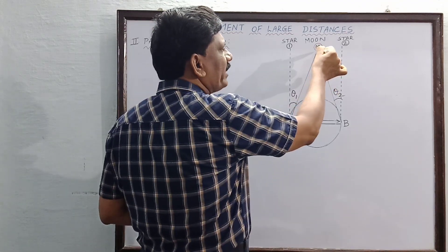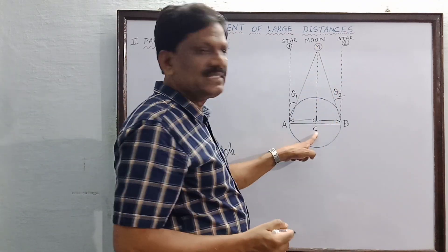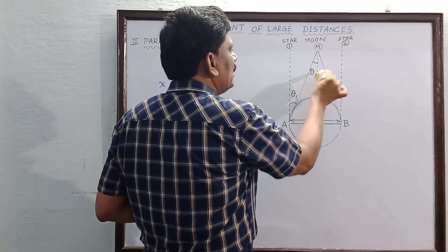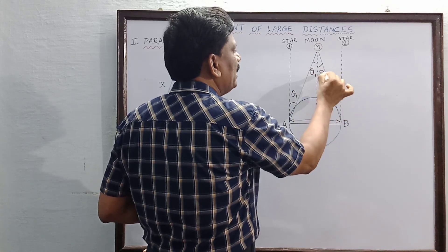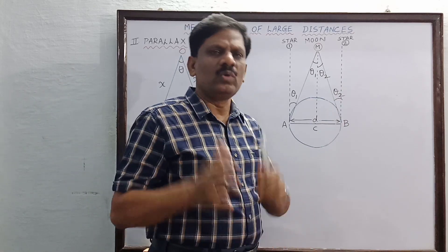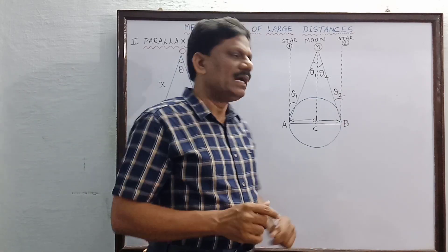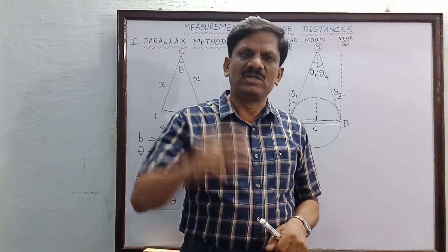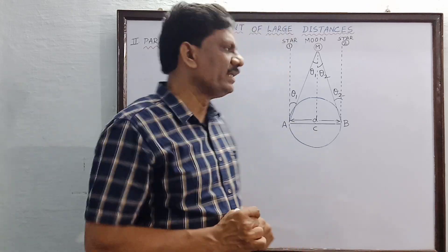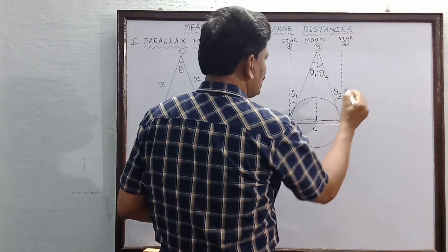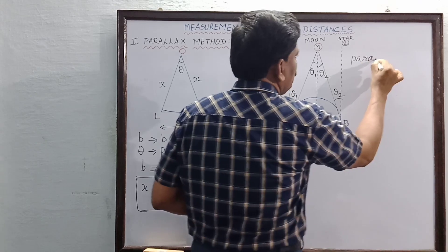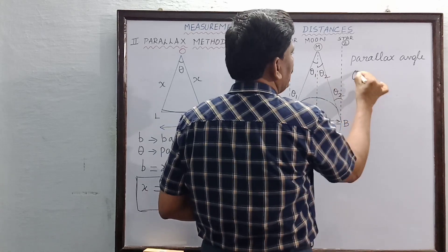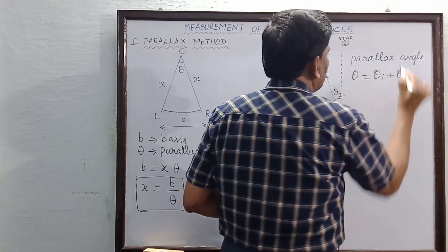I join a straight line from the moon to the center of the earth C. The alternate angle at A will be θ1 and the alternate angle at B will be θ2. The total angle subtended by the moon at the two observing points A and B is called the parallax angle or parallactic angle. So the total parallax angle θ is equal to θ1 plus θ2.